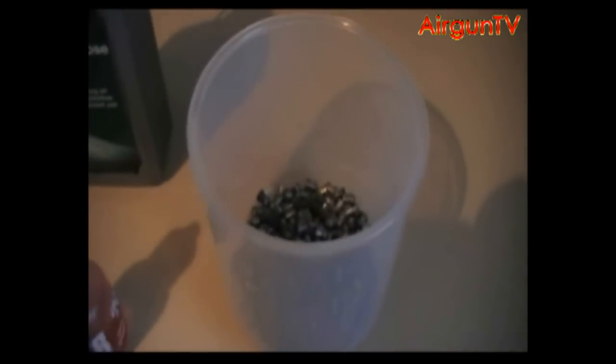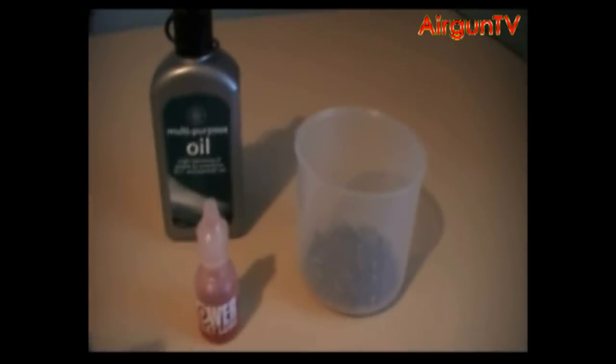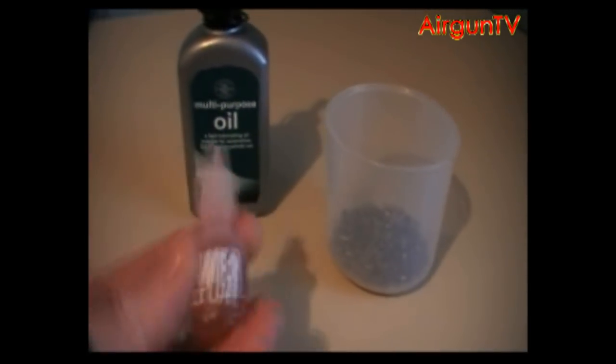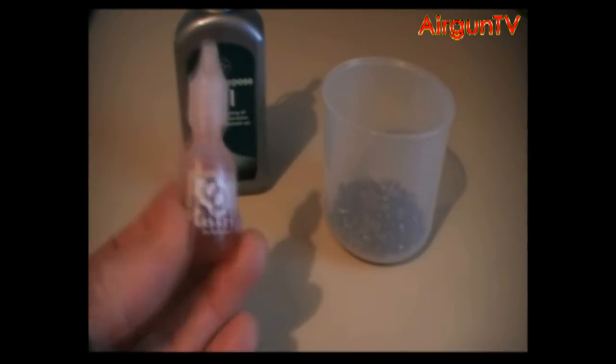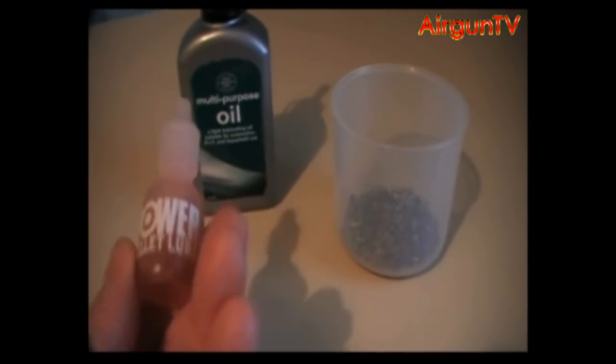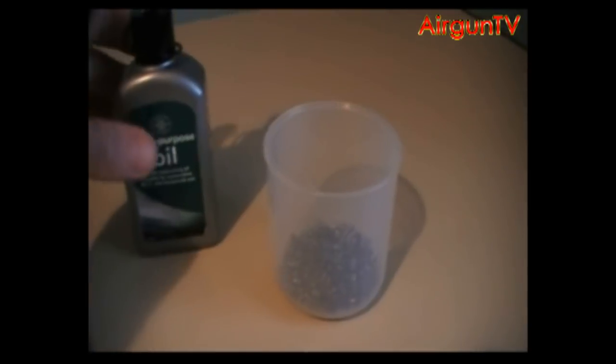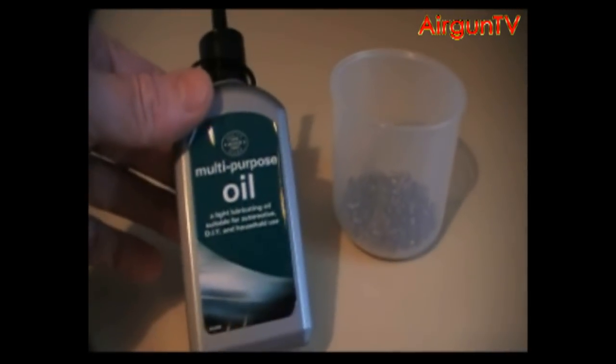Once they've dried off a bit, tip them into your container and add a few drops of your lube. You can either use Napier Power Lube or any multipurpose oil. Just a few drops into your container and give them a bit of a swirl around.